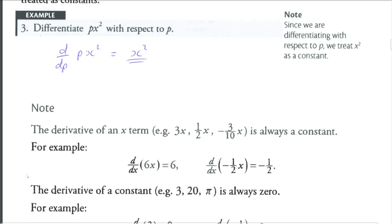And example 3 here, differentiate px squared with respect to p, so it's only the p's I'm differentiating. So if I differentiate 1p, I'll get 1. So if I differentiate px squared, I will get 1x squared.